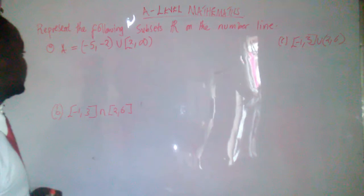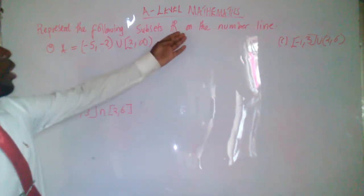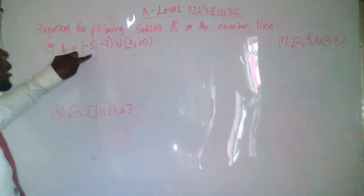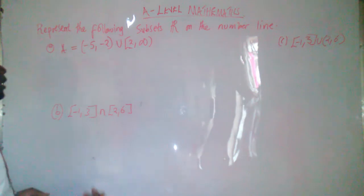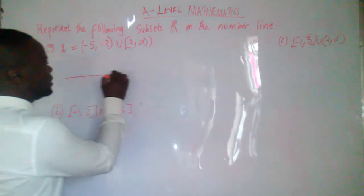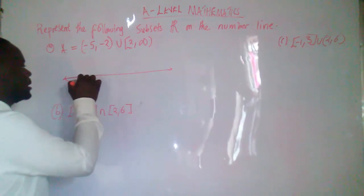So we have got this question here which is saying, represent the following subset R on the number line. So why don't we represent this on the number line? Very simple. Let's enjoy it. So this is our number line. I'm drawing a number line. Let's start it.